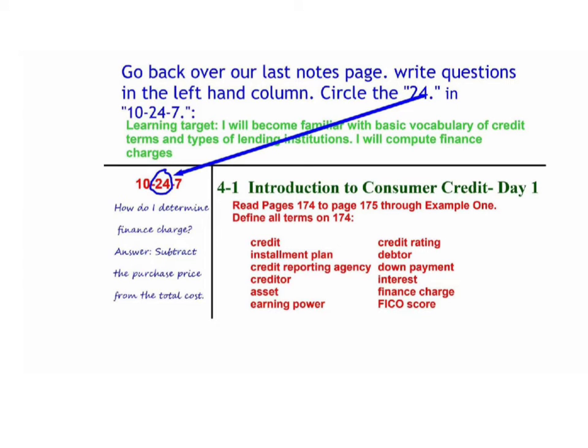Let's take a look at our last notes page, that would be 4-1 Day One, and put a question in the left-hand column: How do I determine finance charge? It's pretty easy — you just subtract the purchase price from the total cost that you paid out. So you take your down payment, add all your monthly payments together, then subtract what the original cost was, and whatever's left over is your finance charge.